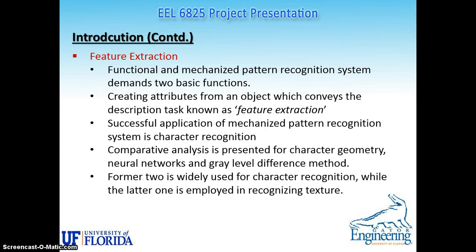Continuing on feature extraction, the functional and mechanized pattern recognition system demands two basic functions. One of them is known as feature extraction, which is like creating the attributes from an object which conveys the description task. The successful application of a mechanized pattern recognition system is character recognition. Comparative analysis is presented for the geometry, neural networks, and gray level difference method. The first two are known as character recognition, and the gray level method is known as texture recognition.